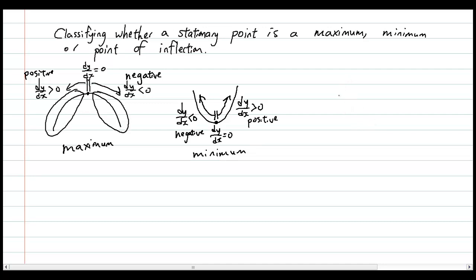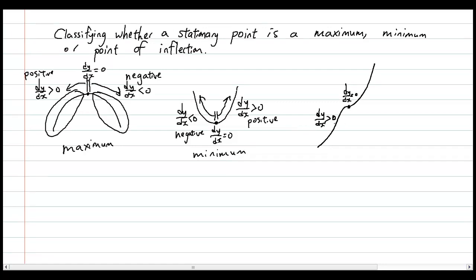There is also a point of inflection, which is a different type of stationary point. It usually occurs in cubics where the line goes up, comes to a stop where the gradient is zero, and then keeps going up again. The gradient is positive, gets smaller and smaller until it reaches zero, and then gets bigger again. So the gradient to the left of the point is positive, it reaches zero, and then is positive again to the right.